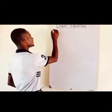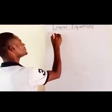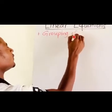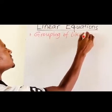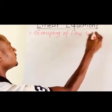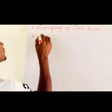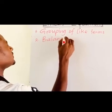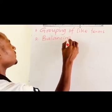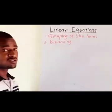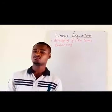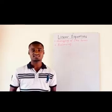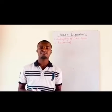Method one is grouping of like terms and method two is balancing. We will use these two different methods to solve simple linear equations in this lesson. Now let's take our first example.